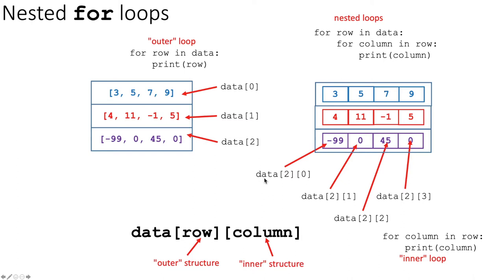If I want to step through the items within a particular row, I can step through the columns in each row. So in this case, if we're talking about row number two, which is the third row at the bottom, then I can step through first column zero, then column one, then column two, then column three.